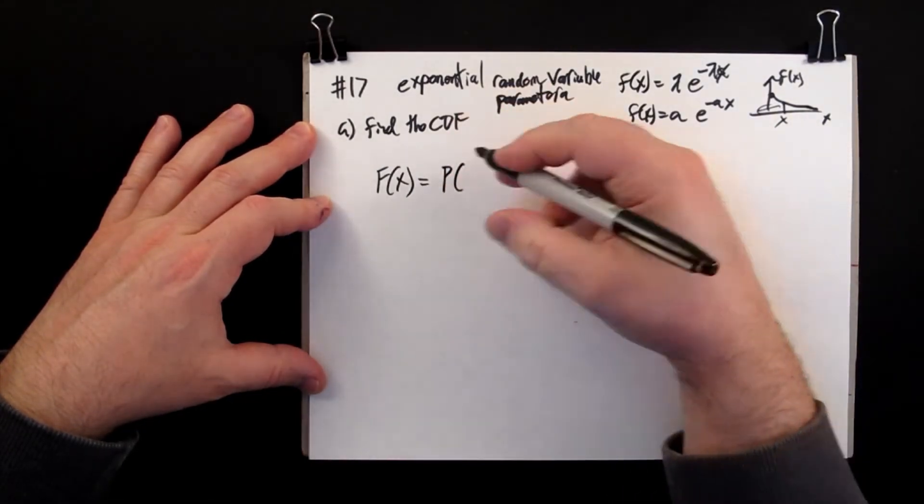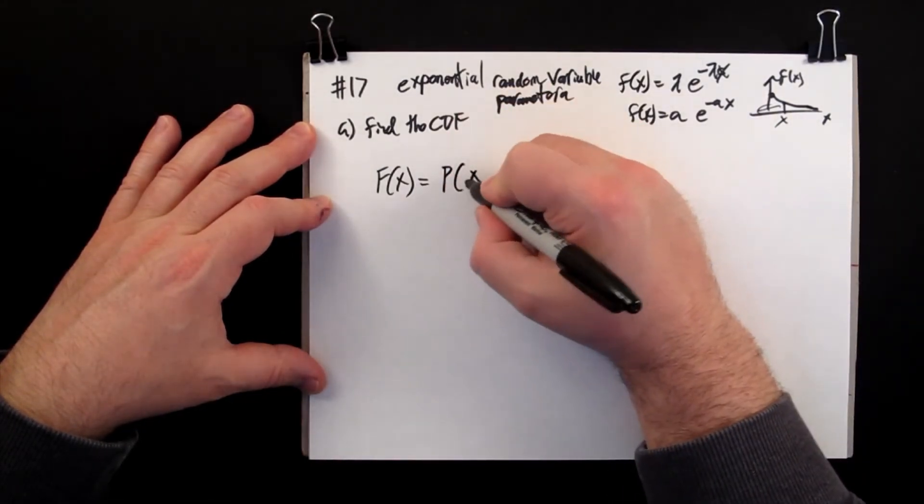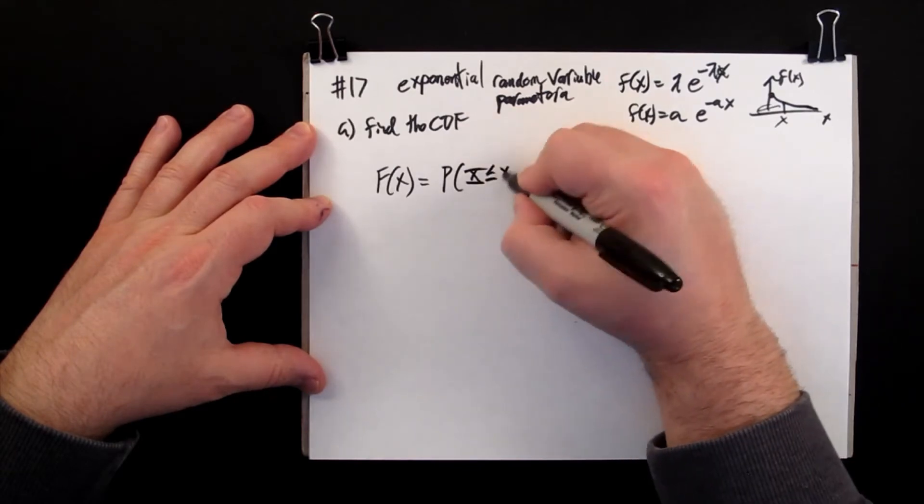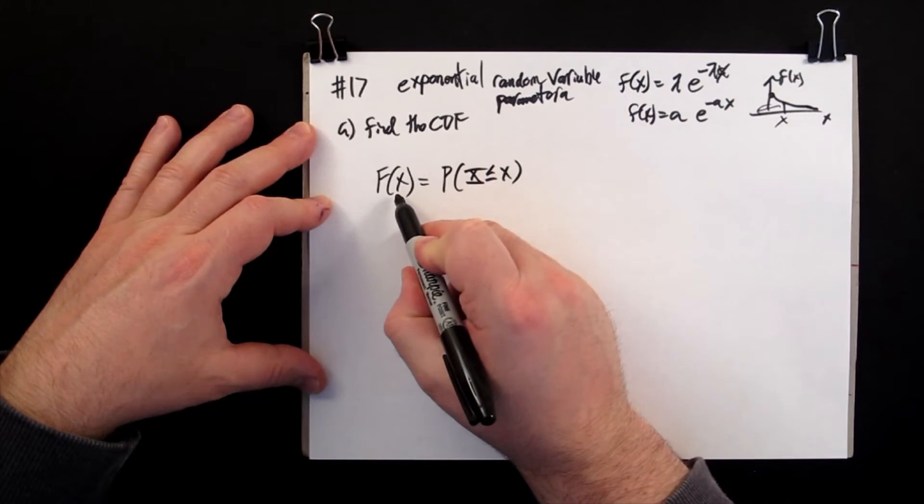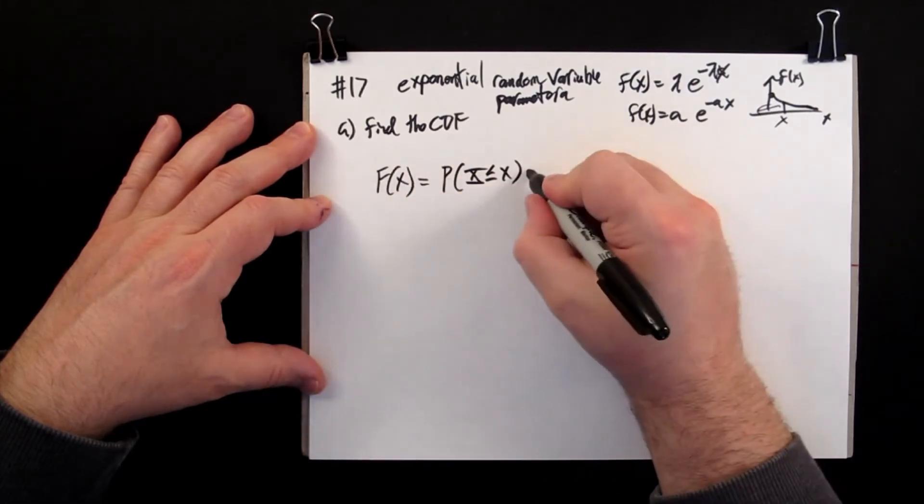It tells you the probability that you encounter the random variable being less than some value. I'm going to call it x here because it's going to be the same as this input to this function.